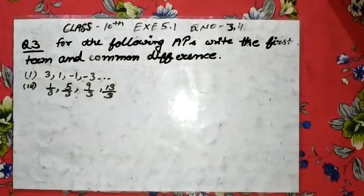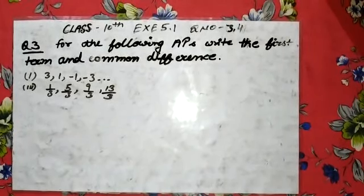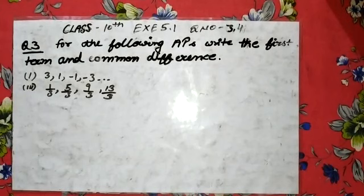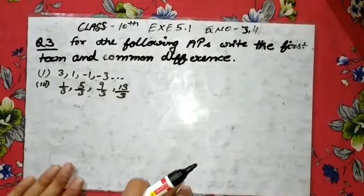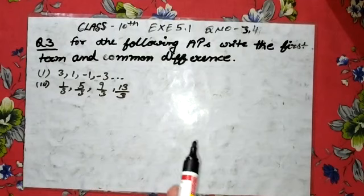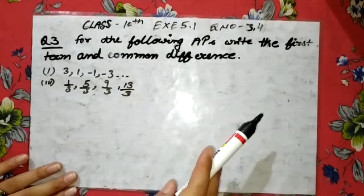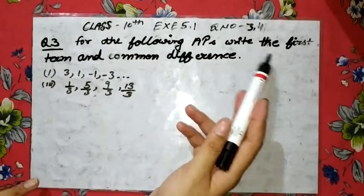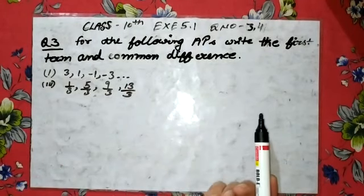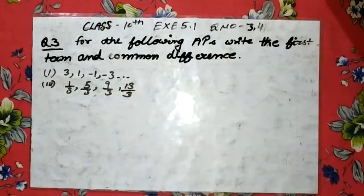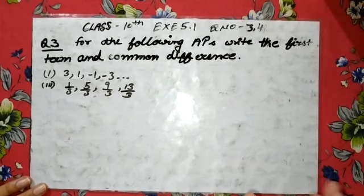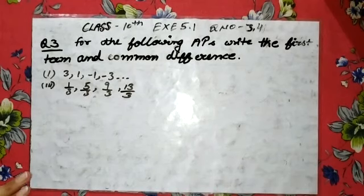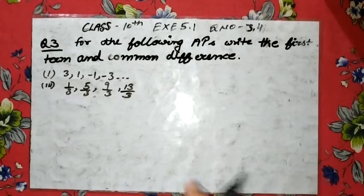Good morning students. Today we are going to discuss question number 3rd and 4th of exercise 5.1. There are 4 questions in exercise 5.1. For the following APs, write the first term and common difference. I have told you about the first term and common difference. If you don't know, watch the introduction video of the 5th chapter.